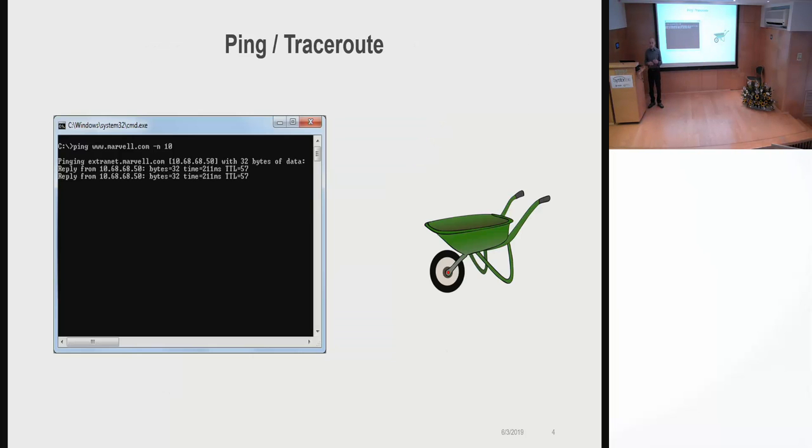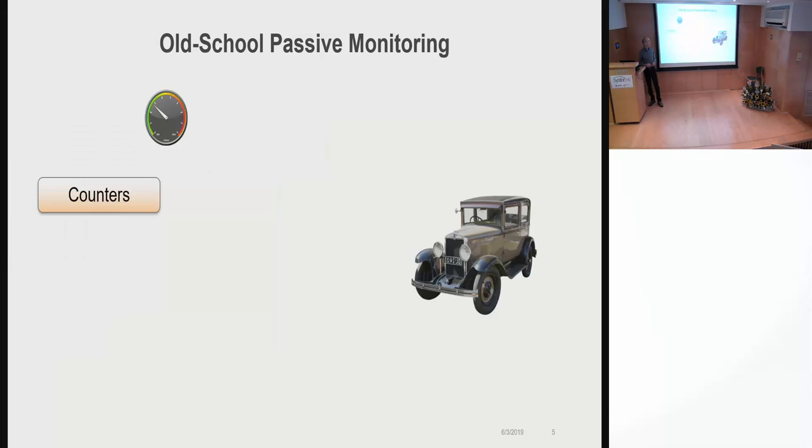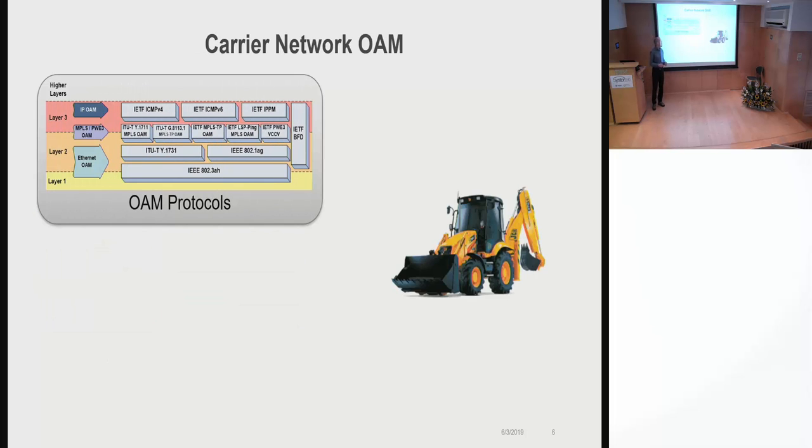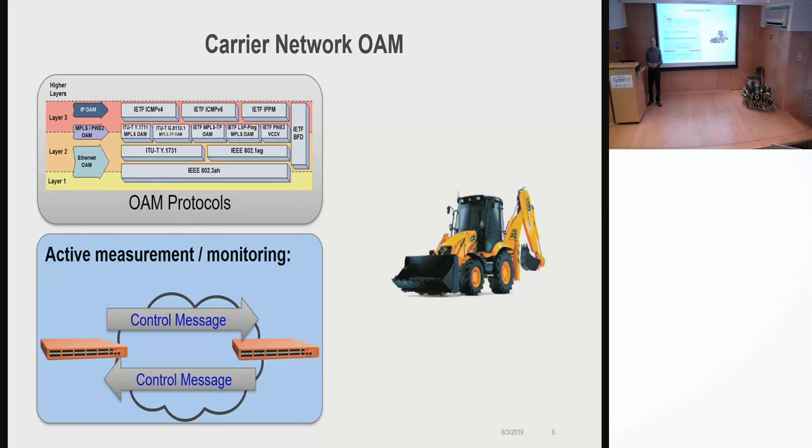Everyone knows ping and traceroute. In addition to ping and traceroute, we also have other mechanisms. We have passive monitoring like NetFlow, IPFIX, also very commonly used. In carrier networks there's dozens of different protocols and standards which are used for measurement and monitoring, and these have been around for many years. So with all these different existing mechanisms for measurement and monitoring, the question that comes up is what are we missing here?